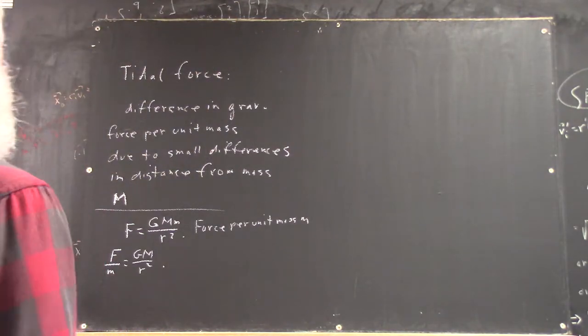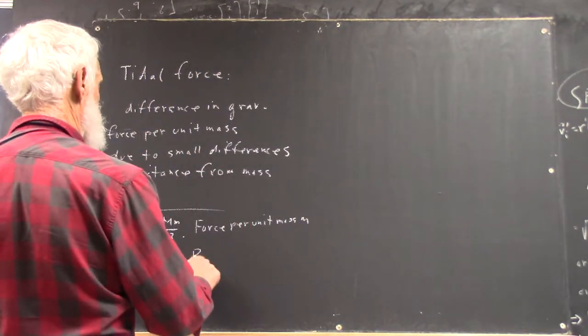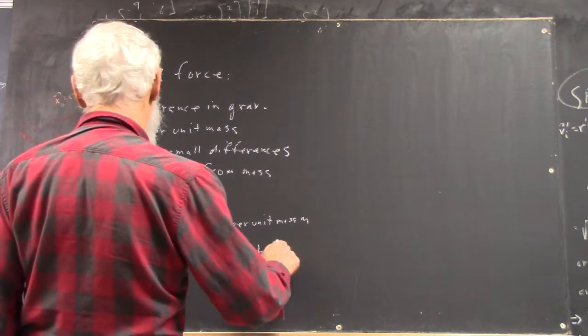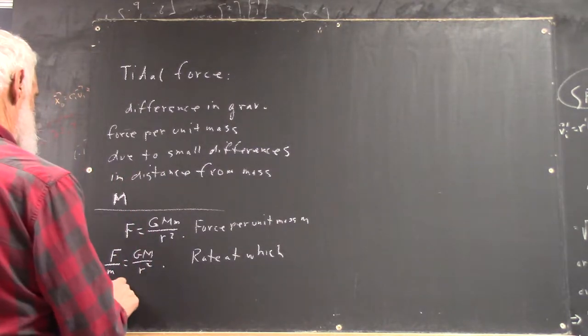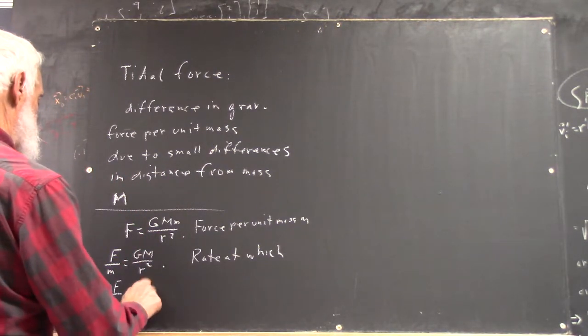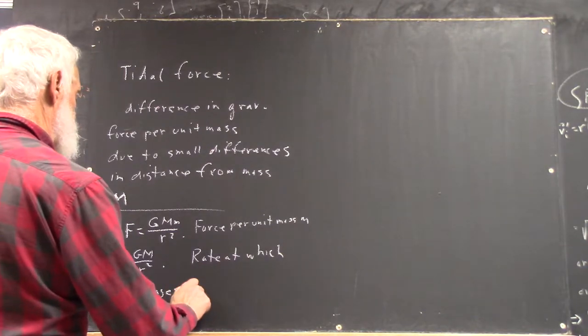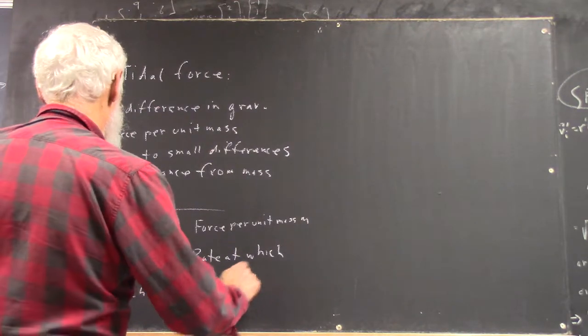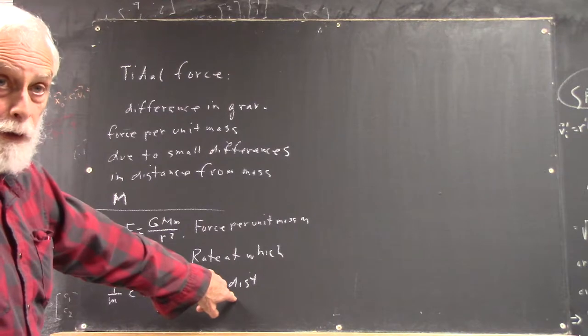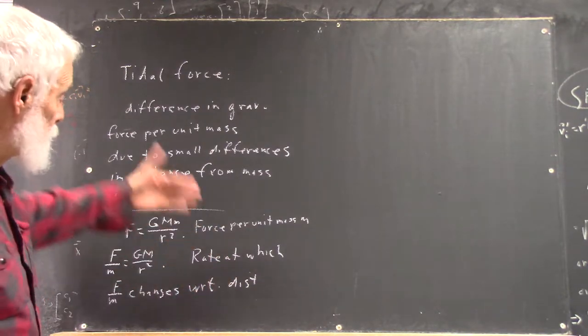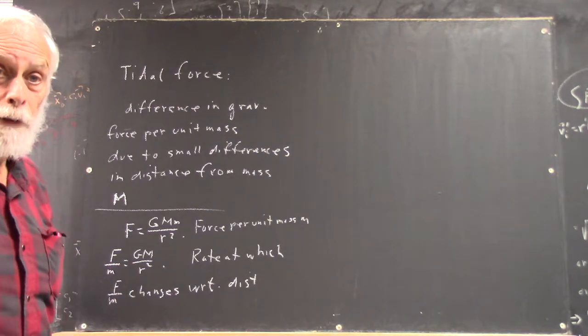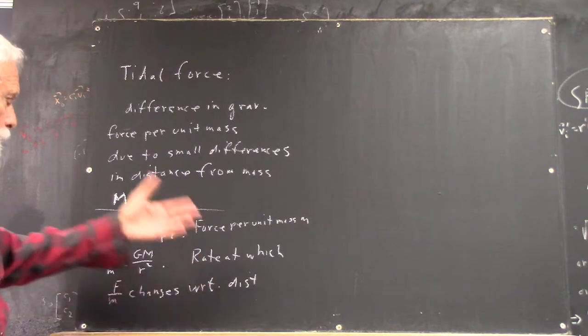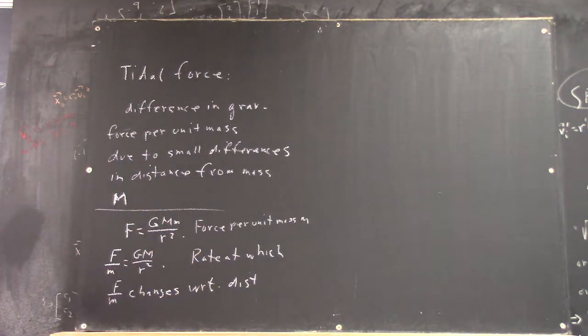Now, the rate at which your force per unit mass changes with respect to your distance. And the distance implicitly being the distance from the big mass, right? Well, what is that? How do you calculate the rate, the expression for the rate at which F over m changes with respect to distance?